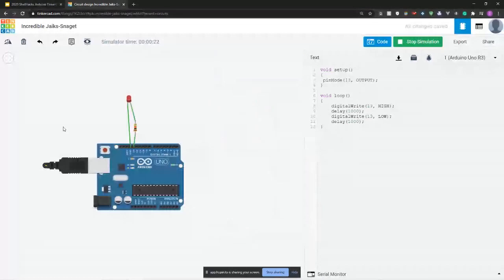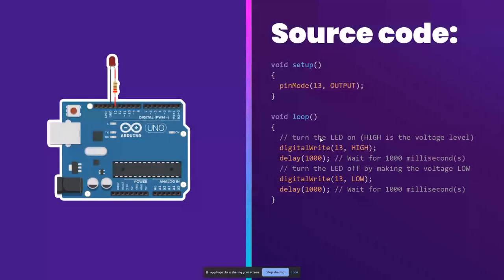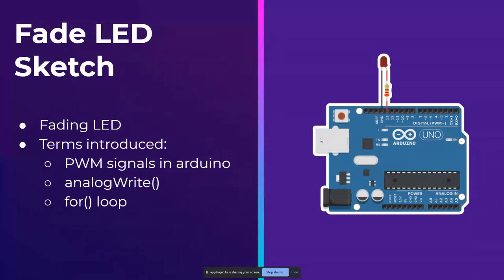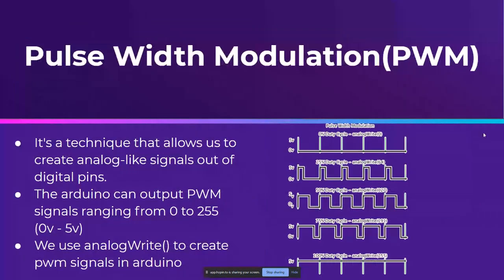We got the blink LED sketch going. I'm going to be posting these slides on the Discord for anyone that wants to reference back to them later. Next we're going to be doing the fade LED sketch. In this case we're going to be using the PWM signal, and the methods we're going to be using are analogWrite and the for loop. If you're a little new to programming, we're still going to explain what a for loop is. Before we get started with the sketch, let me explain a little bit about the PWM signal and how it works.